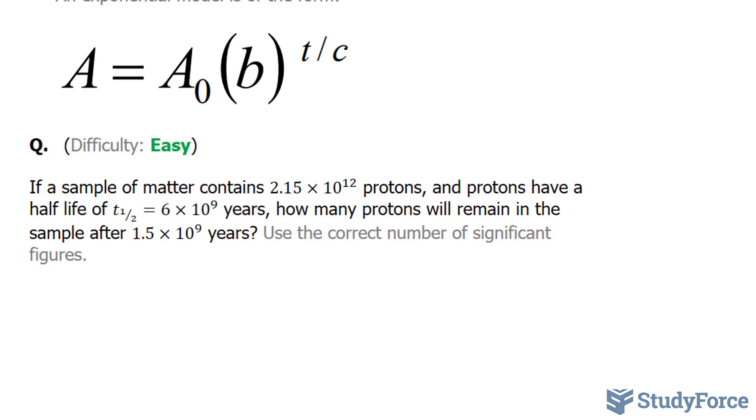To answer this question correctly, we'll need to use the model above, but we'll first need to define what these letters mean. This A represents the final amount. This represents the initial amount. B will represent the number 0.5 because the initial mass will be decreasing by a factor of 2 each time.